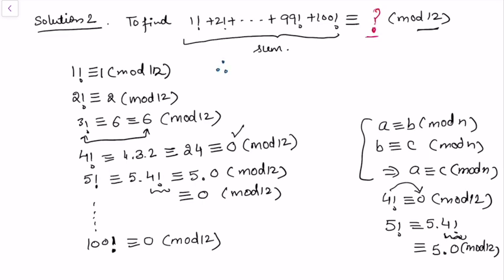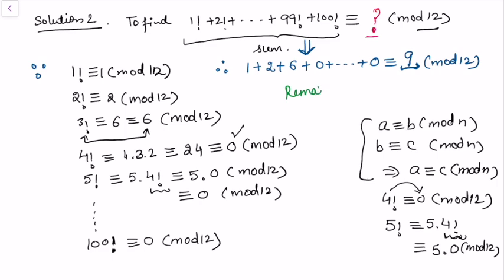Substituting back into the sum: 1! = 1, 2! = 2, 3! = 6, and every term from 4! onwards is congruent to 0. So the sum reduces to 1 + 2 + 6 = 9 modulo 12. Since 9 is smaller than 12, it acts as the remainder. Therefore, the remainder when the sum is divided by 12 is 9.